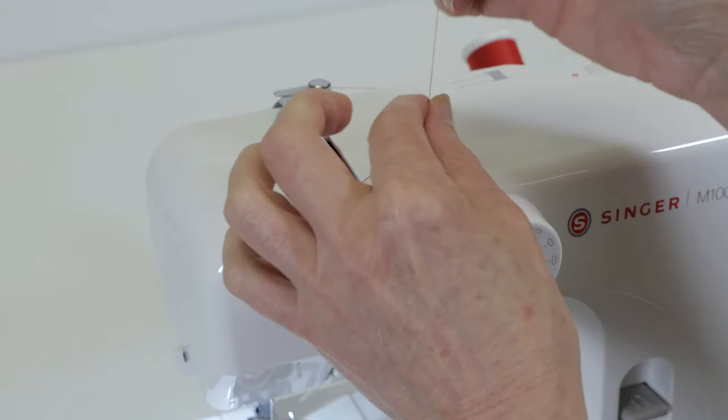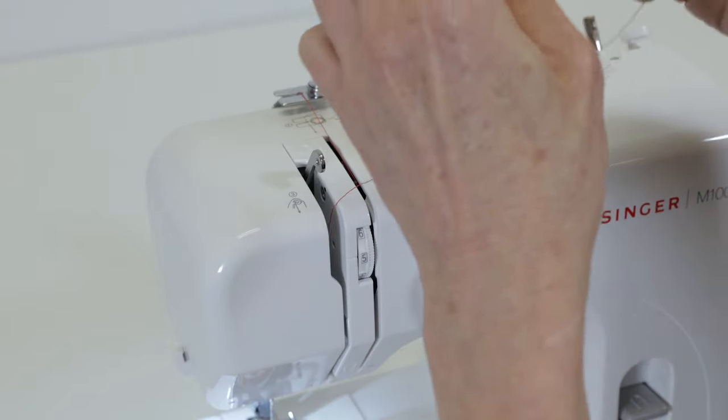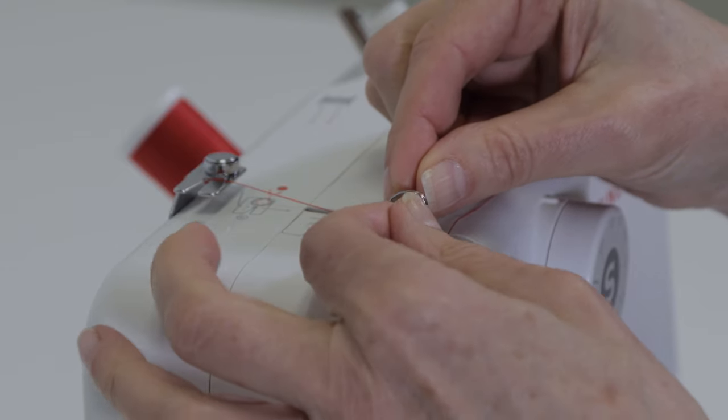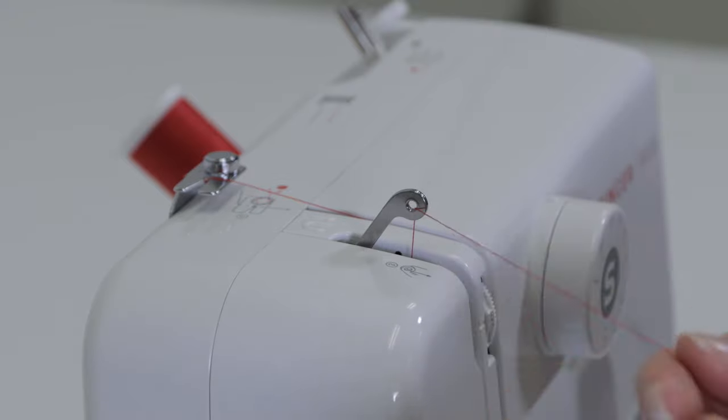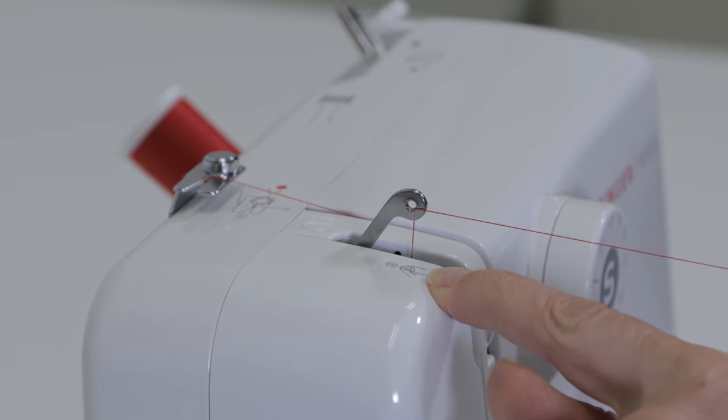Back up, and you're going to manually thread the eye of the take-up lever from right to left, like so. And that also is indicated on this guide here at the top of your machine.